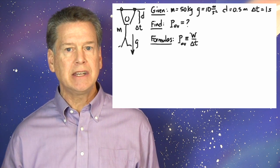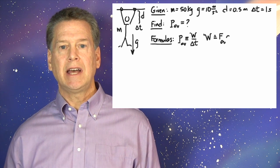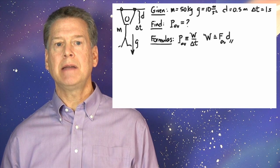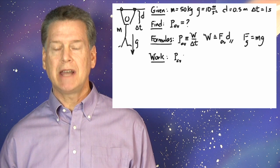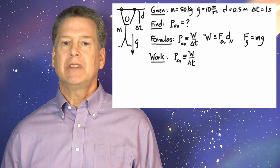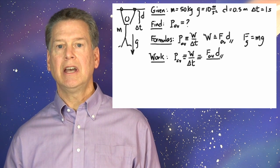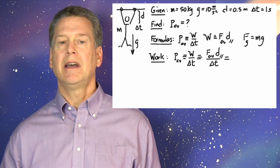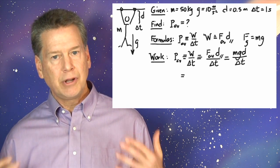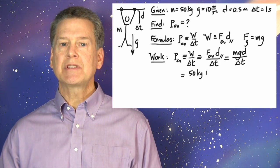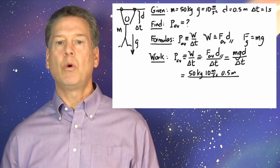P sub AV is defined as W divided by delta T. W is defined as F sub AV times D divided by delta T. That's MGD over delta T. Now, plug in numbers and units. 50 kilograms times 10 meters per second per second times .5 meters divided by one second.